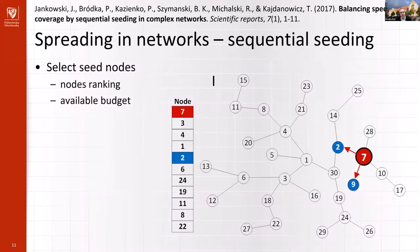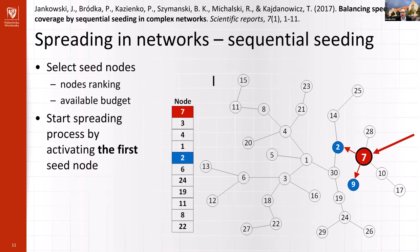The beginning of the sequential seeding process looks exactly the same — we rank our nodes depending on some measure. But instead of spending the whole budget at once and activating all seed nodes at once, we activate just one node and save the rest of the budget for the next iteration of the spreading process. In our toy example, instead of activating nodes seven, three, four, one, two and six like before, we activate just node seven. Because node seven has the highest degree and is connected to node two, it was able to activate node two.